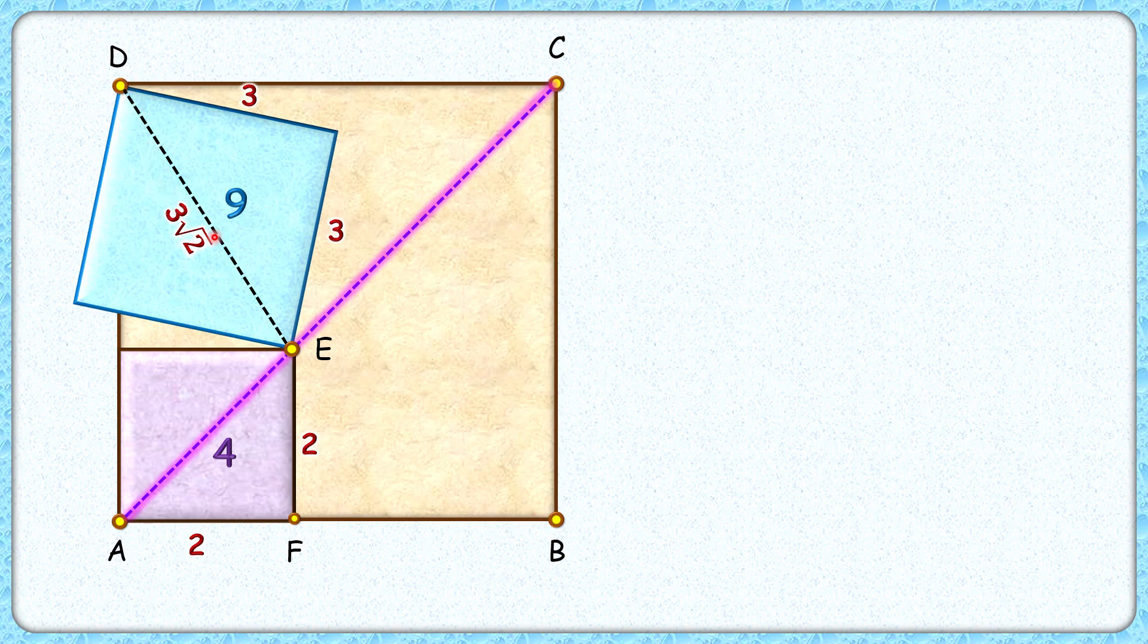And DE length, that's mirror image, will be EB. Now DE length is 3√2, so EB length will also be 3√2 centimeters. Now in this triangle, at point F we have got an angle of 90 degrees.